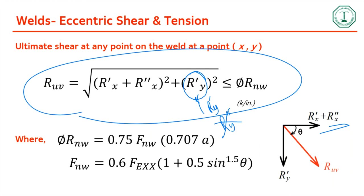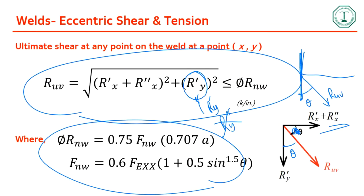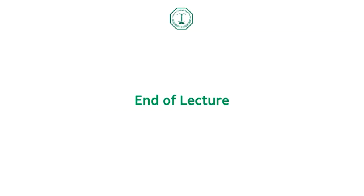This is similar to the previous discussion. The value of theta is important: since the weld is oriented vertically and the resultant force is in a certain direction, theta is the angle between them. Be clear about the orientation when doing the problem. Now let's move into the first problem.